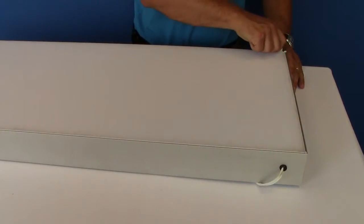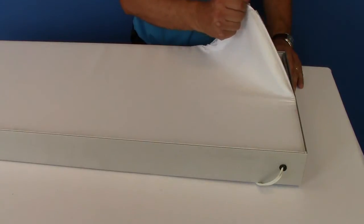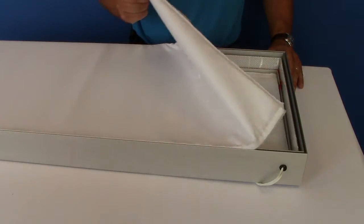Installing a new fabric on your lightbox is very simple and only takes a few steps. First, pull the white tab up and begin peeling off the fabric you want to replace.